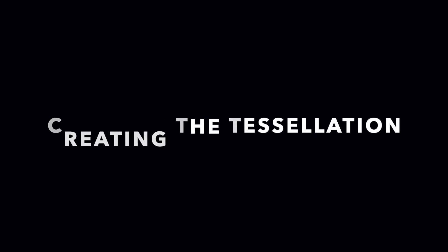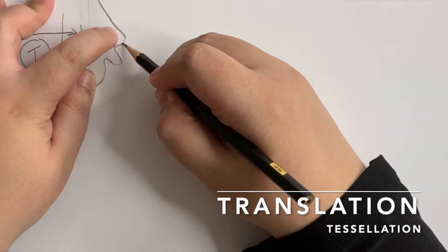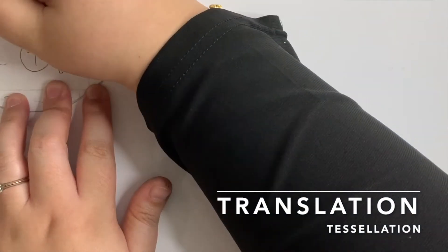Now, let's start with the tessellation. I'm going to show you the translation tessellation first. Take the translation template, place it nicely on your paper and trace out the shape carefully.